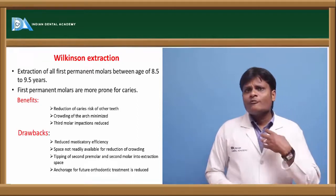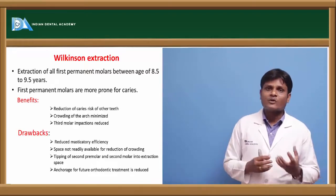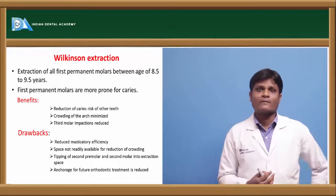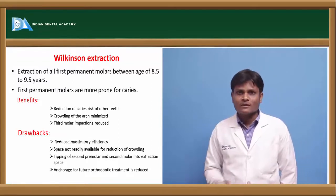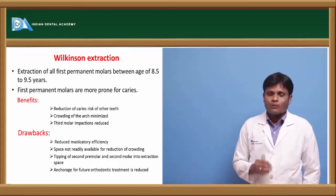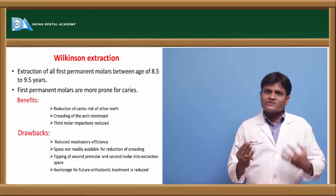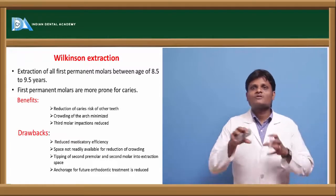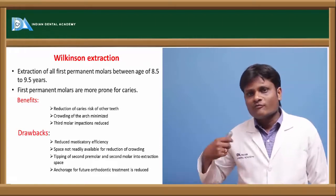Additionally, once we have an extraction space of the first permanent molar, the second premolar drifts distally into the extraction space and the second permanent molar will also drift into the extraction space, thereby disturbing the occlusion of the patient. So these are the different advantages and disadvantages of first permanent molar extraction. Whether it be a first permanent molar, first premolar, or second premolar, once you decide to extract a particular tooth for therapeutic purpose, you should have strong support — weigh the merits and demerits before instituting a therapeutic extraction procedure. Once a tooth is extracted and out of the socket, once lost is lost — we can't regain it back. Think before extraction.